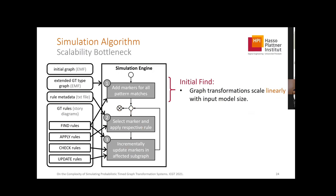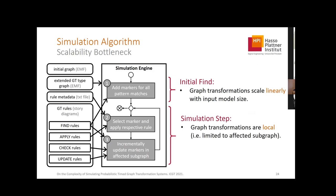Now let's look at what we expect for scalability. For the initial find phase, we have to find all possible matches across the full model, so we assume it scales linearly with model size — O(N). For the simulation step, we hope that graph transformations remain local, restricted to the affected subgraph, enabling constant time. However, marker selection requires considering all invariants globally, and this will be what we examine most.